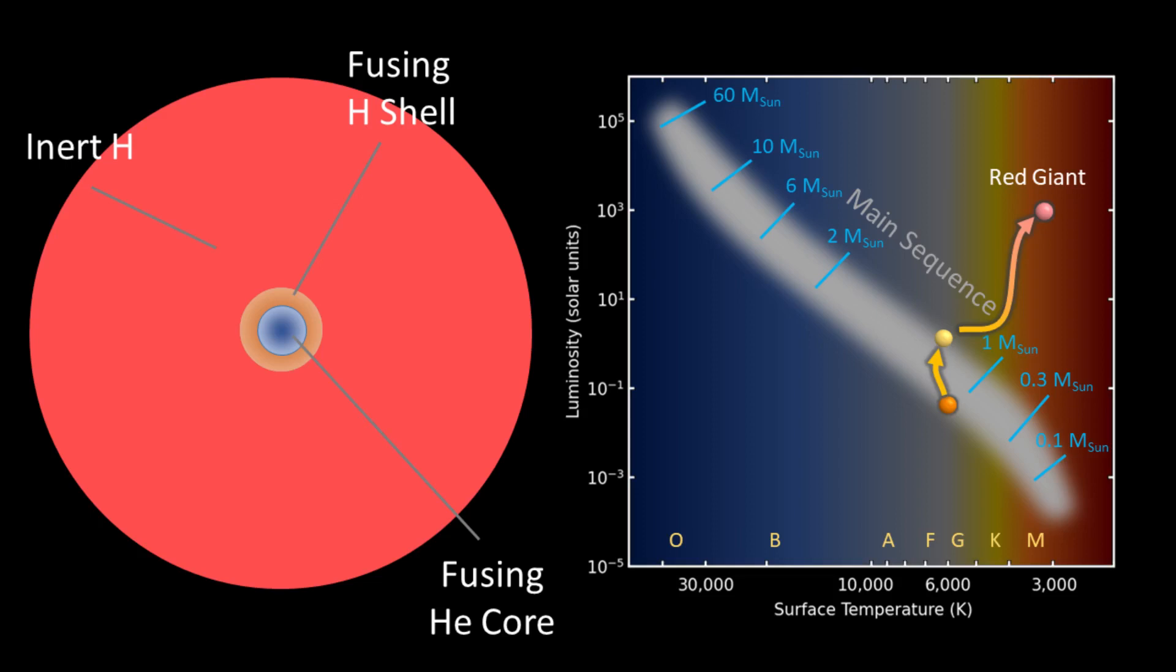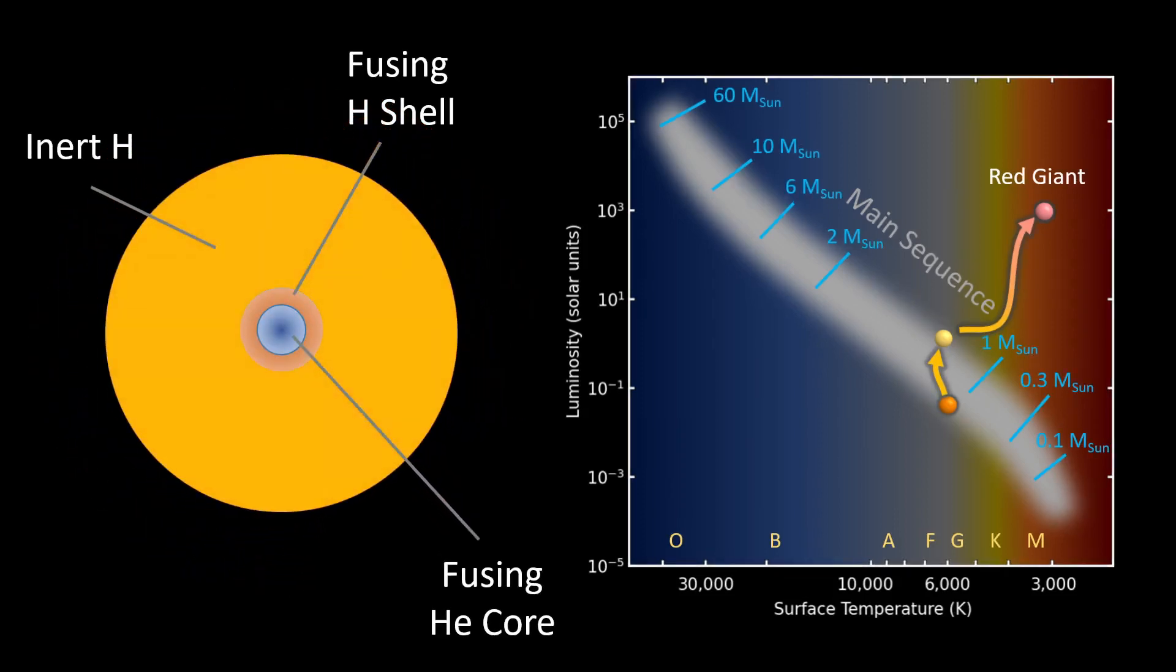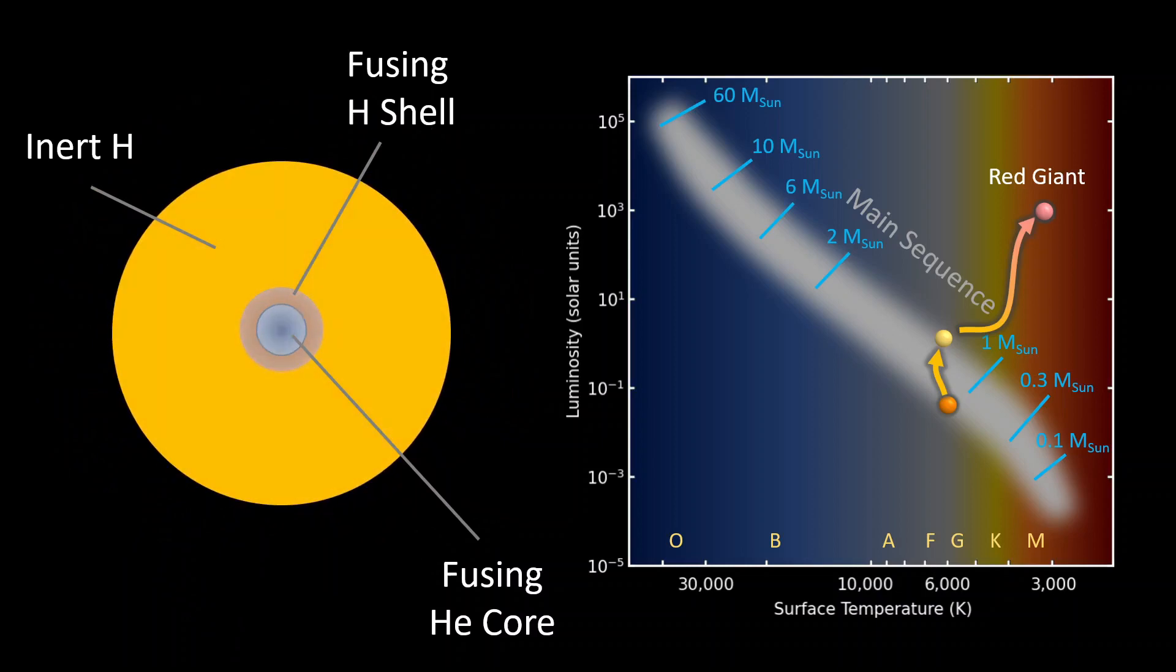Once energy is produced by helium fusion in the core, a state of equilibrium similar to that characterized by the main sequence stage is reached. The production of energy falls from the peak reached during the red giant stage. Luminosity of the star is reduced, the outer layer contracts somewhat, and the surface temperature increases, turning the star's color back to yellow from red. In the HR diagram, the star will move downward and to the left of the red giant position.